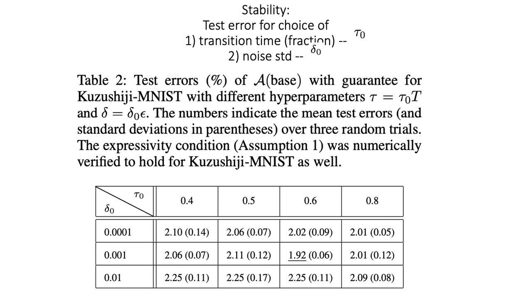And we also check the stability for different choice of hyperparameters. So in our modified algorithm, there are two hyperparameters. One is the fraction of transition time. The other is the noise standard deviation.